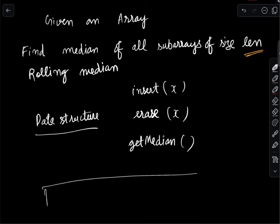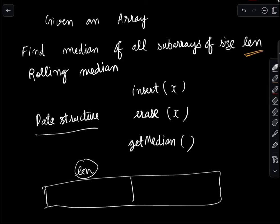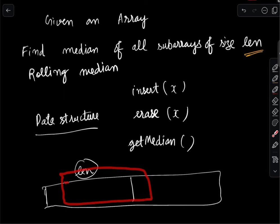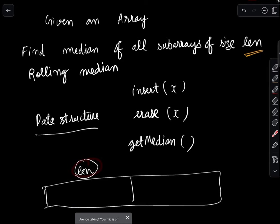With this data structure, we start with the first subarray of the given length. For each subsequent subarray, we call insert on the new element and erase on the outgoing element. After that, the data structure holds exactly the elements of the next subarray of that size, so we can iterate over all subarrays this way.